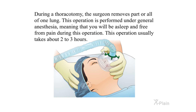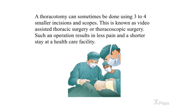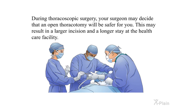Thoracotomy: During a thoracotomy, the surgeon removes part or all of one lung. This operation is performed under general anesthesia, meaning you will be asleep and free from pain. The operation usually takes about two to three hours. The surgeon makes an incision across your side and your ribcage is separated using special instruments to expose the lung. A thoracotomy can sometimes be done using three to four smaller incisions and scopes — this is known as video-assisted thoracic surgery or thoracoscopic surgery, which results in less pain and a shorter stay at the healthcare facility. However, during thoracoscopic surgery, the surgeon may decide that an open thoracotomy will be safer, resulting in a larger incision and longer stay.